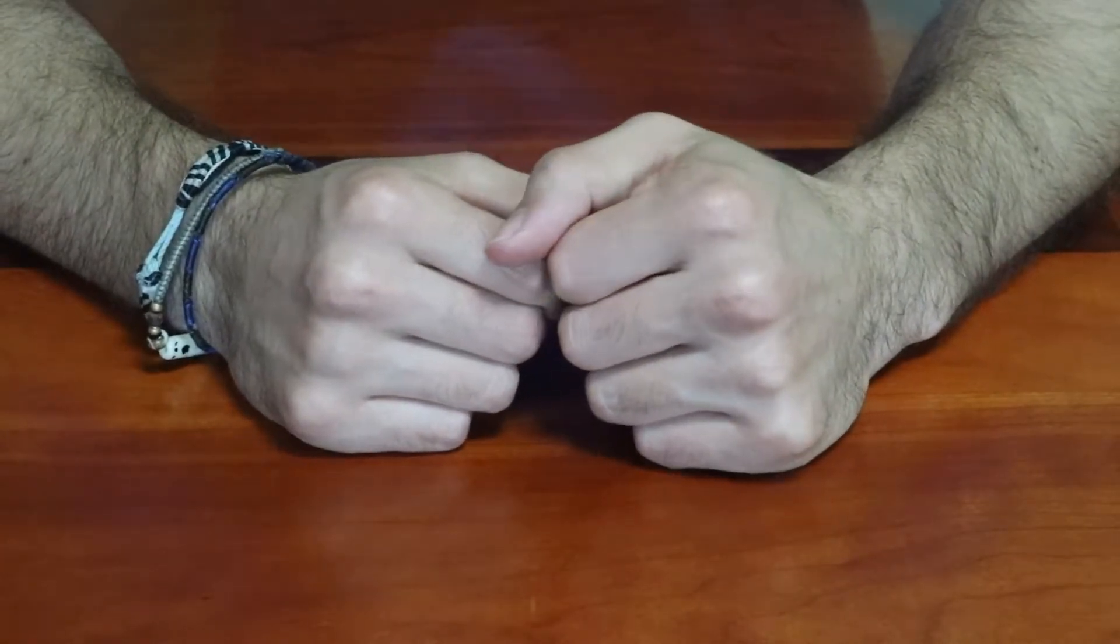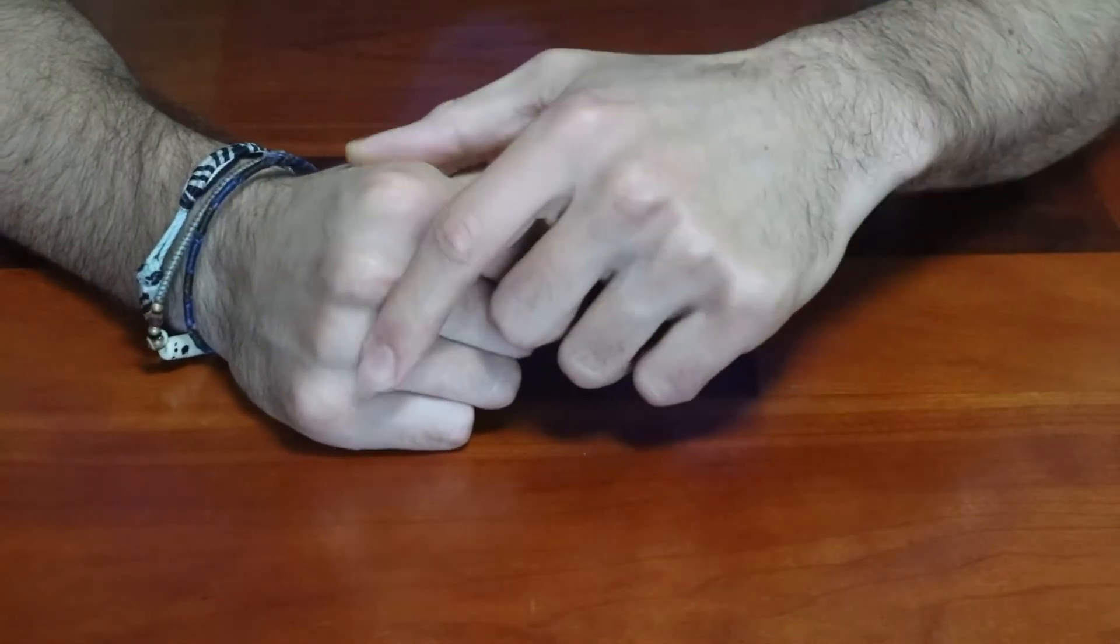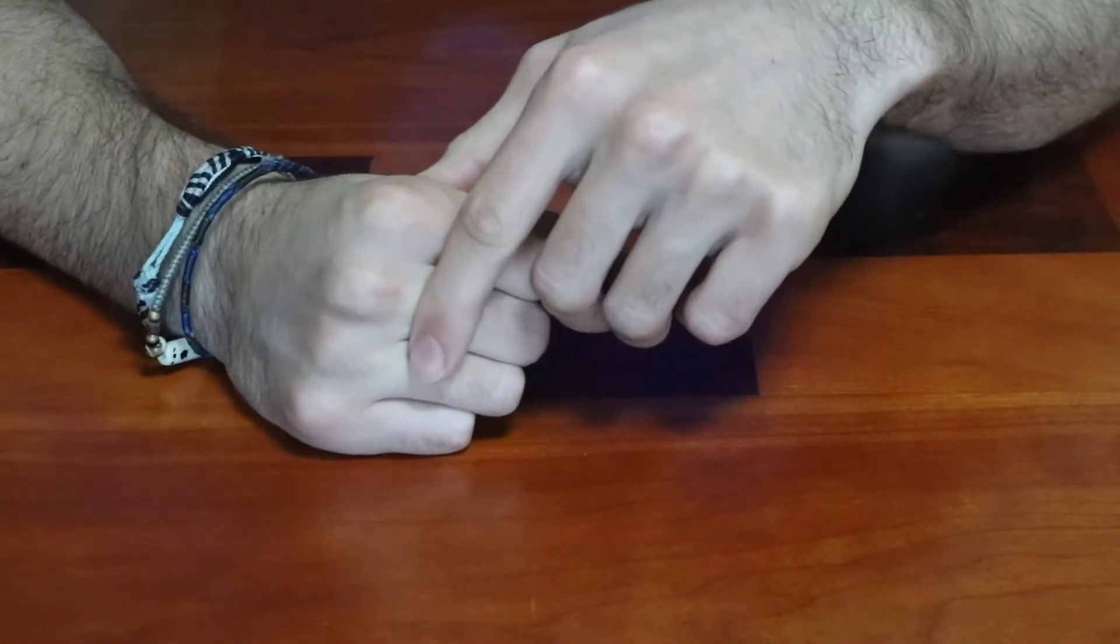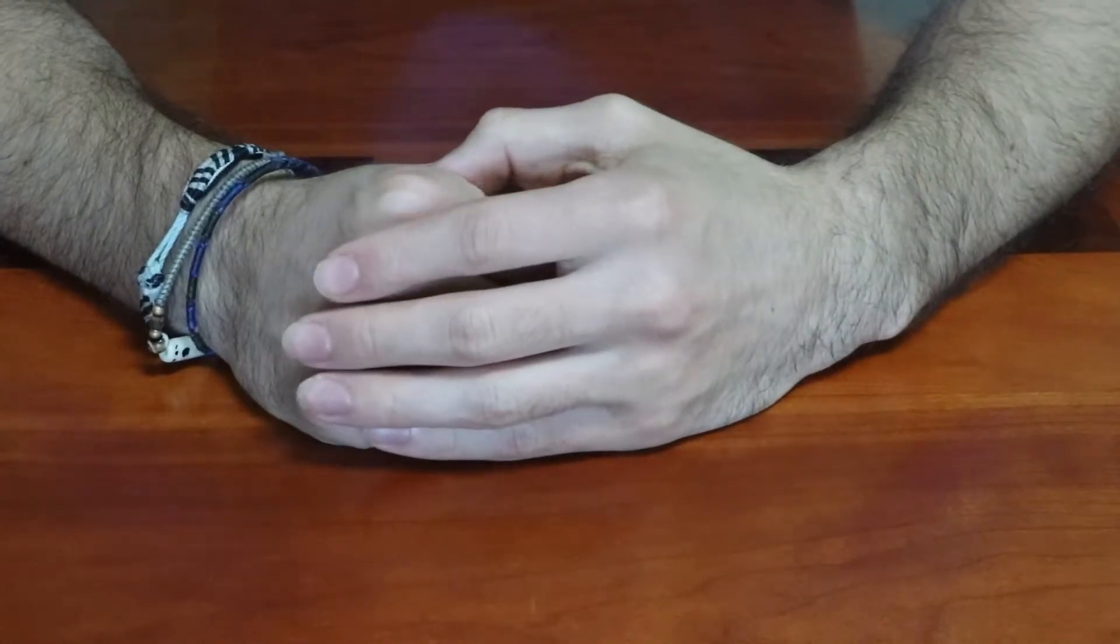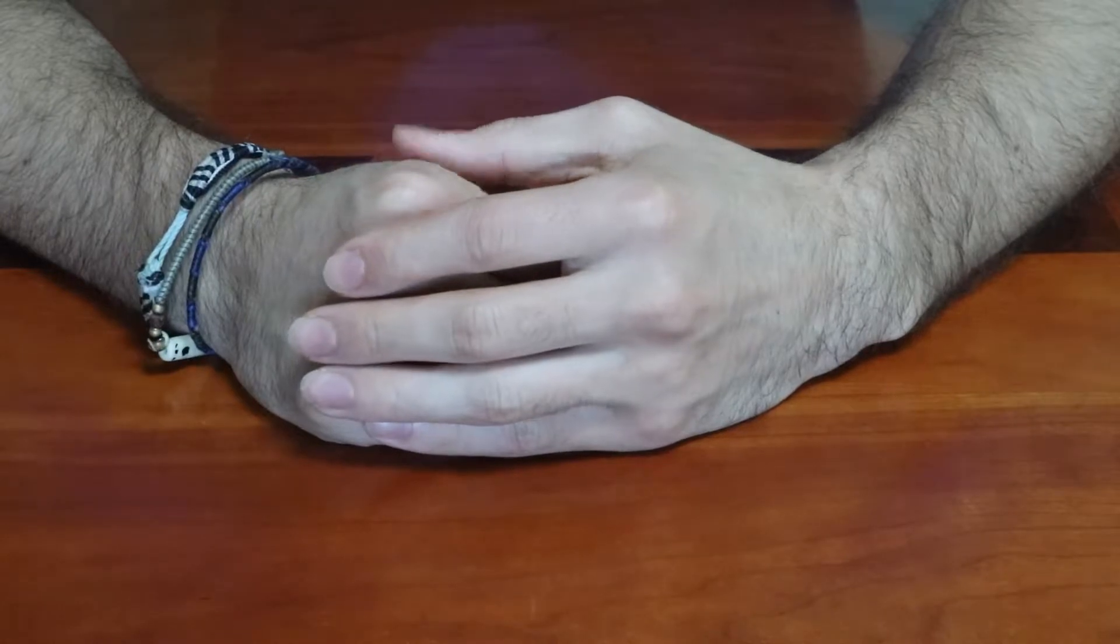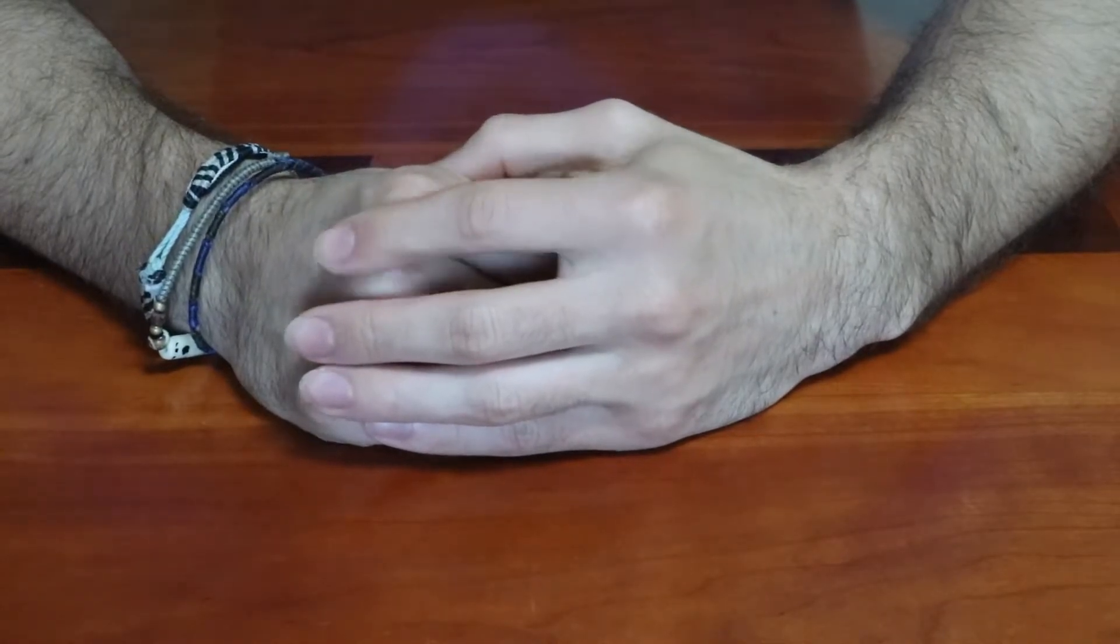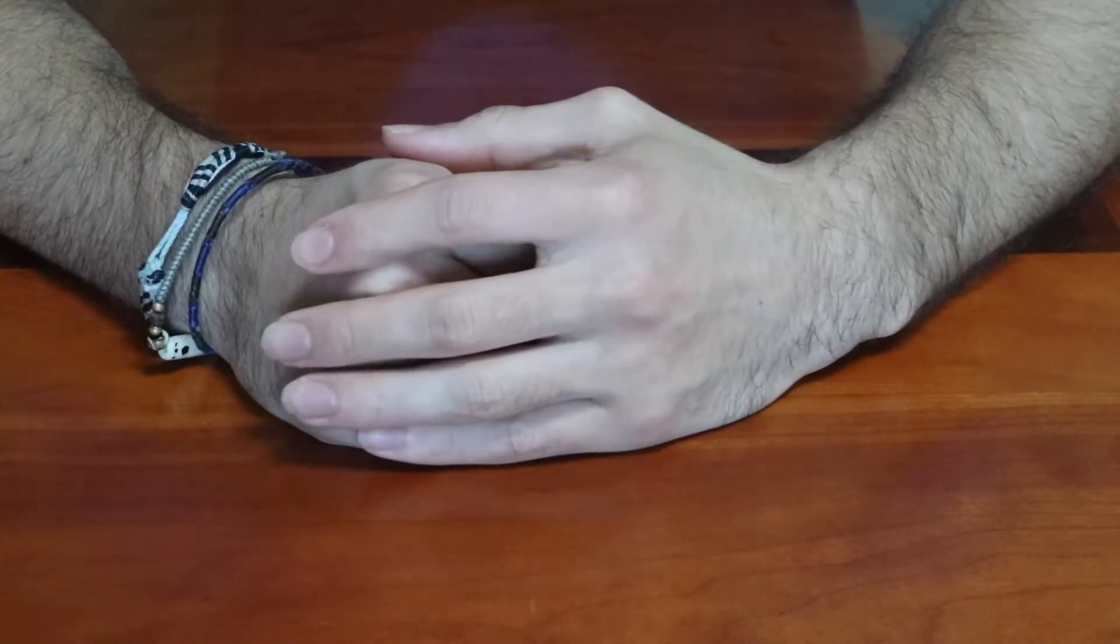Sometimes we can feel these in the form of pain, like a little twinge here and there. Sometimes they get really aggravated and it's a consistent level of discomfort. Other times we only feel them when we actually directly push on them. You may have many trigger points through your hands and forearms that you just don't know are there.